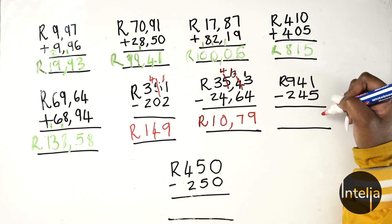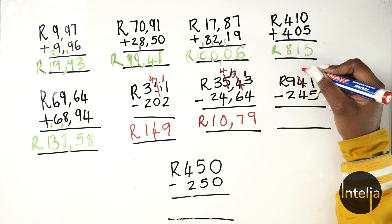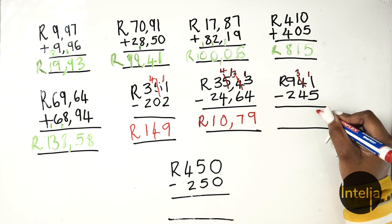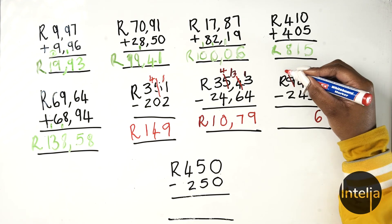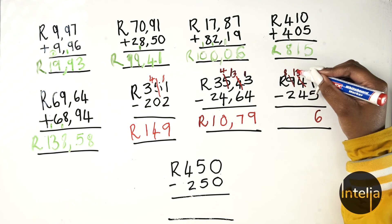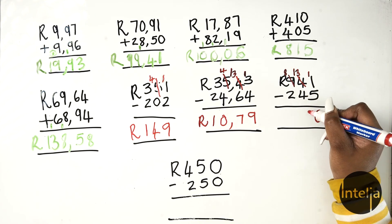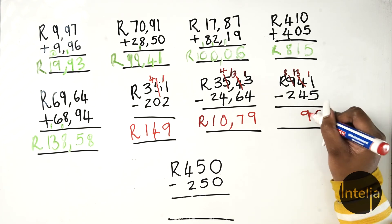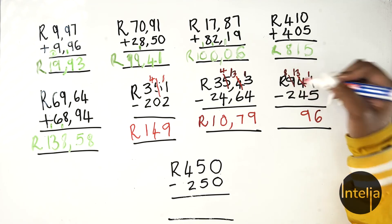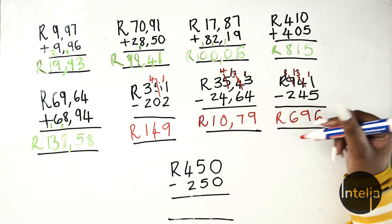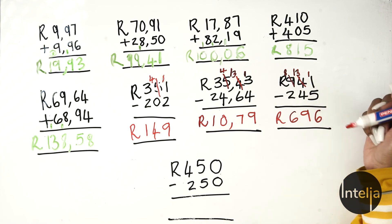Moving on: 941 rands minus 245 rands. 1 minus 5 — borrow from your neighbor, neighbor remains with 3, so 11 minus 5 gives you 6. Then 3 minus 4 — borrow again, neighbor remains with 8, so 13 minus 4 is 9. Then 8 minus 2 is 6. So your answer is 696 rands.